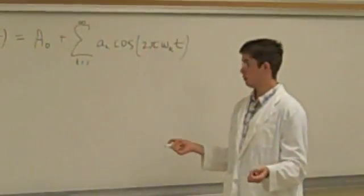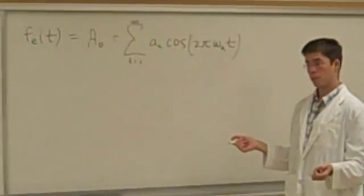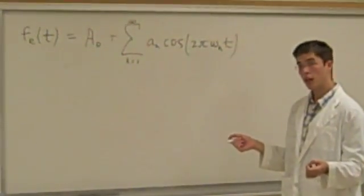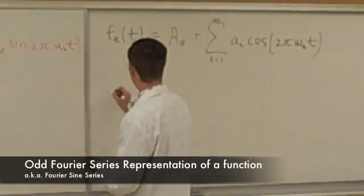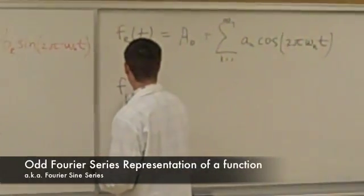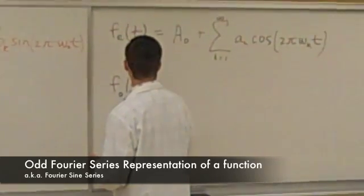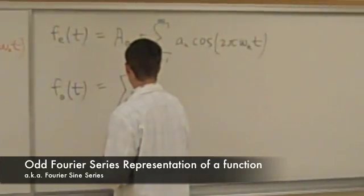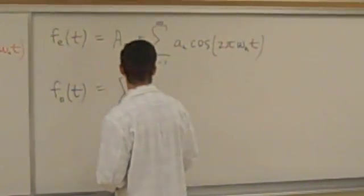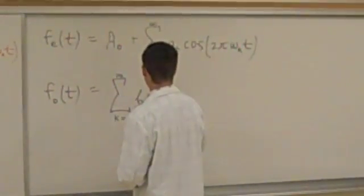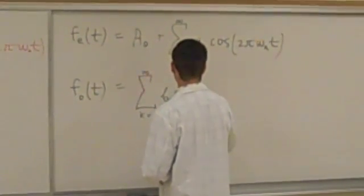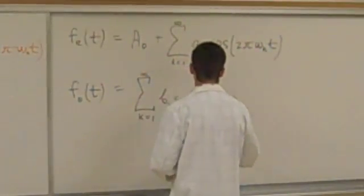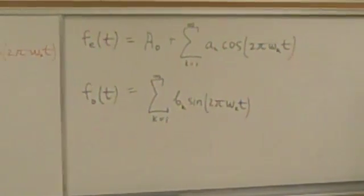If we had an odd function that we were working with, we can write the odd Fourier series representation of a function. It would look like the summation of b sub k sine of 2 pi omega sub k t — that is the odd Fourier series representation.